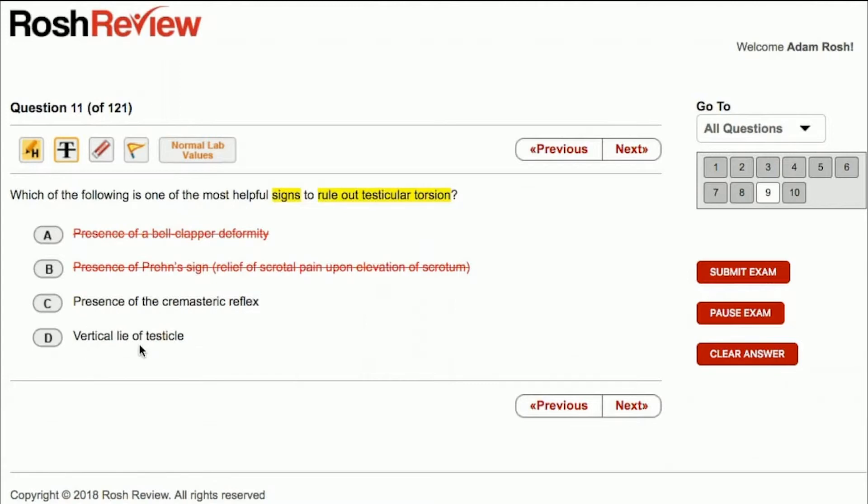Now let's go to vertical lie of the testicle, answer choice D. The vertical lie is a normal lie of the testicle. And even if you have a normal lie of the testicle, you certainly can still have testicular torsion. So answer choice D is incorrect, which leaves us with C.